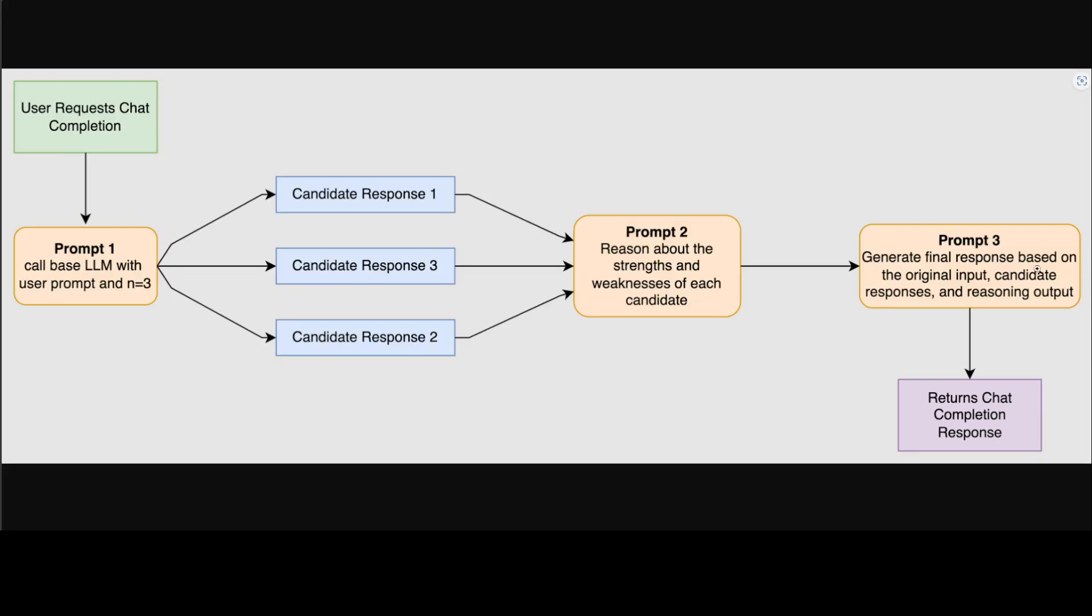And then there is prompt three that again passes the original input, the three candidate completions, and their critics. Using this information, the base model generates the final completion that incorporates the best of all three candidates, and this is the whole flow.